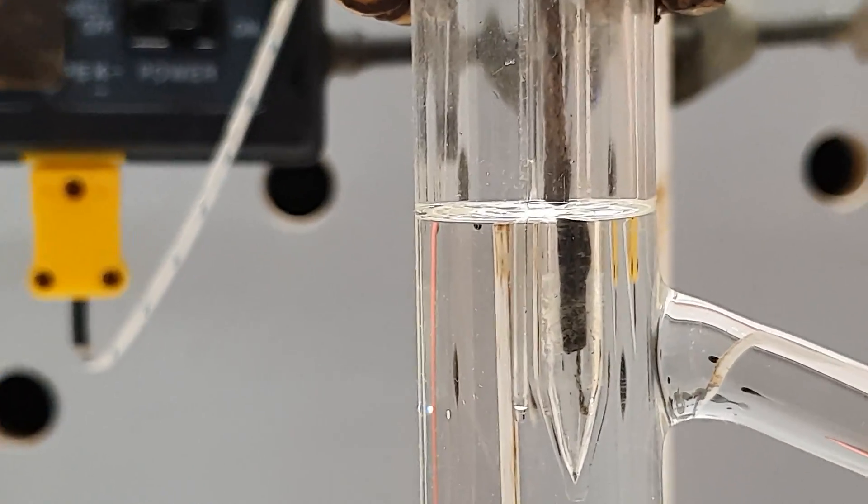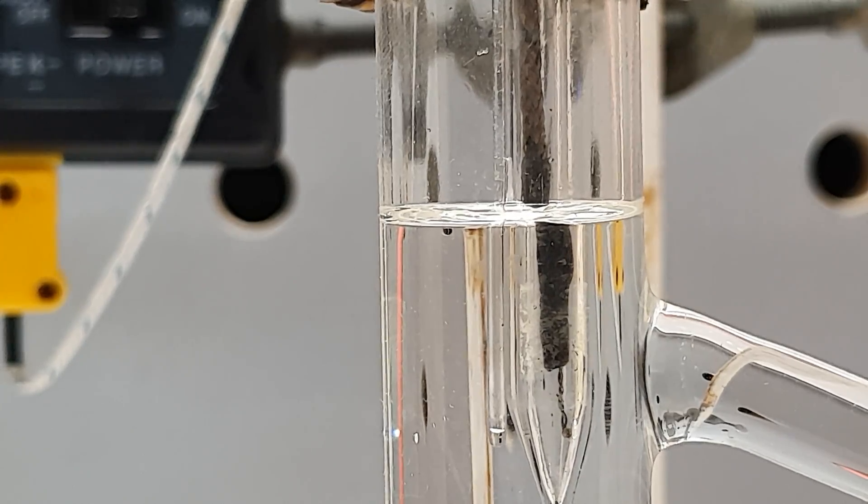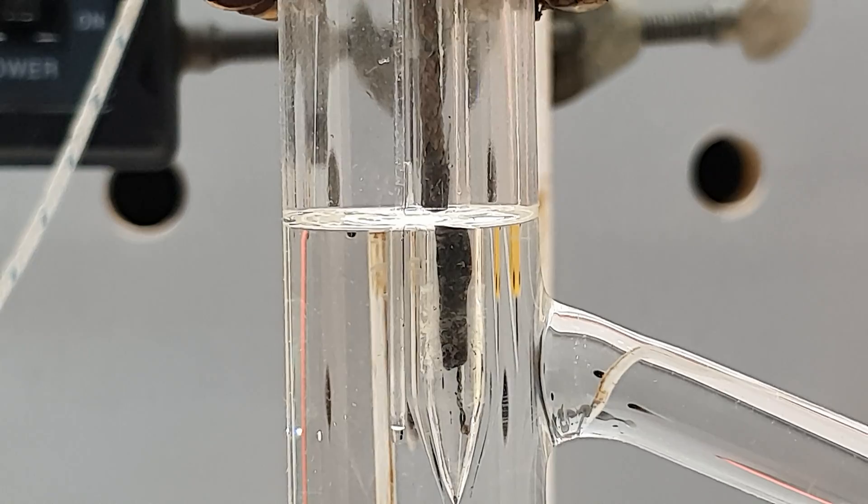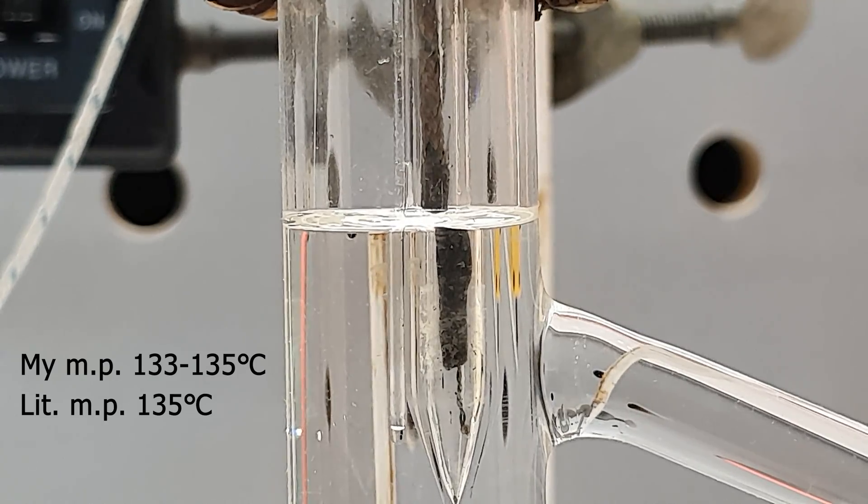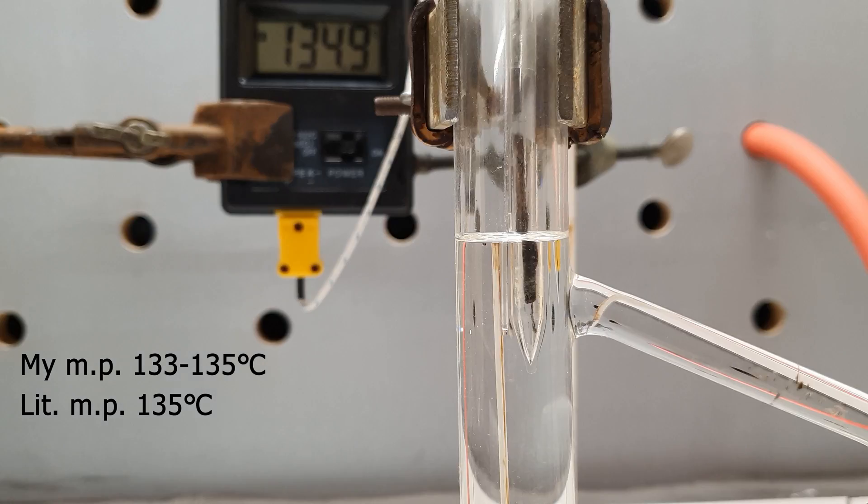When the melting point is reached the solid in the capillary melts and becomes transparent. If the compound is pure this will happen in a very tight temperature interval which is characteristic of every compound. In my case the solid melted between 133 and 135 degrees Celsius which corresponds well to the literature melting point of aspirin which is 135 Celsius. After all my thermocouple has a 1 degree error interval.